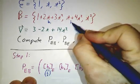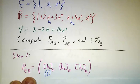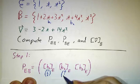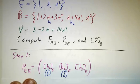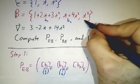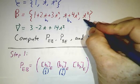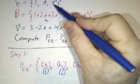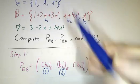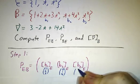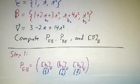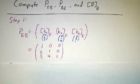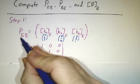b2 is our second element of the b basis. And its coordinates are 0, 1, 4. b3 is 0 plus 0t plus 1t squared. So its coordinates are 0, 0, 1. So put them all together and we have our matrix P_EB.